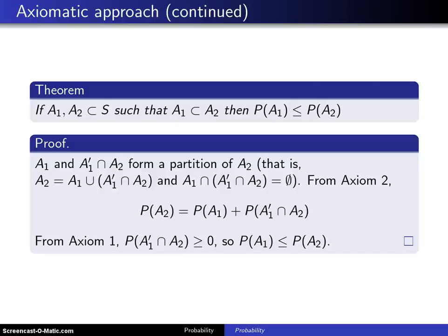Here is a second theorem that can be developed from the axioms. If A1 and A2 are two events that are subsets of the sample space S, such that A1 is a subset of A2, then the probability of A1 occurring is less than or equal to the probability of A2 occurring.